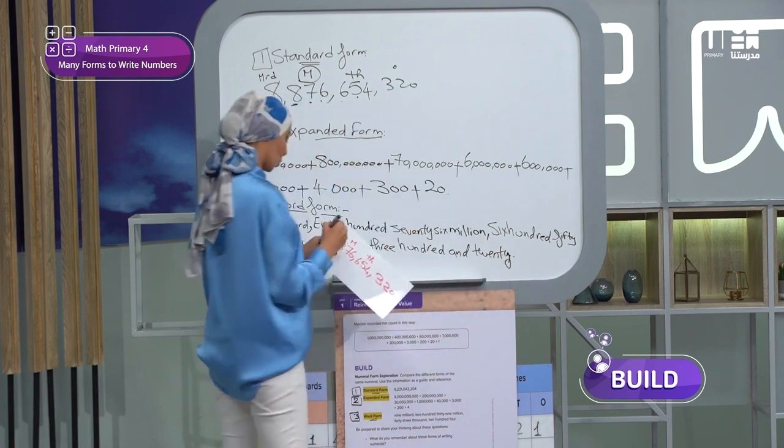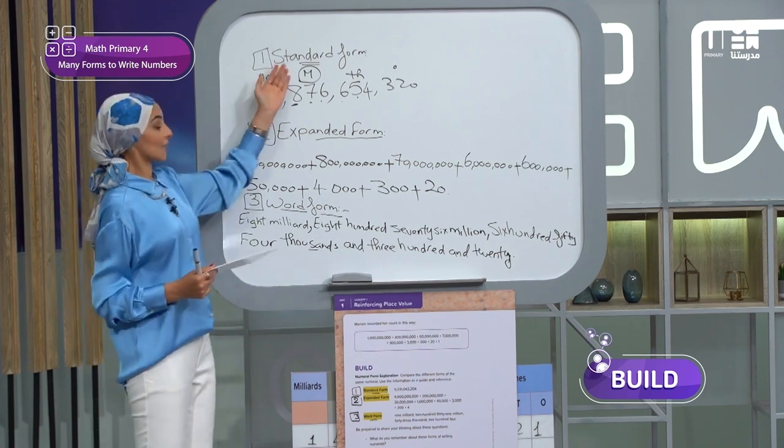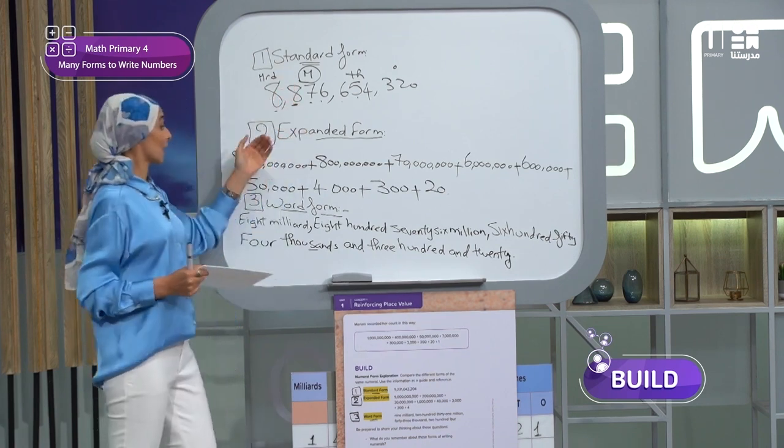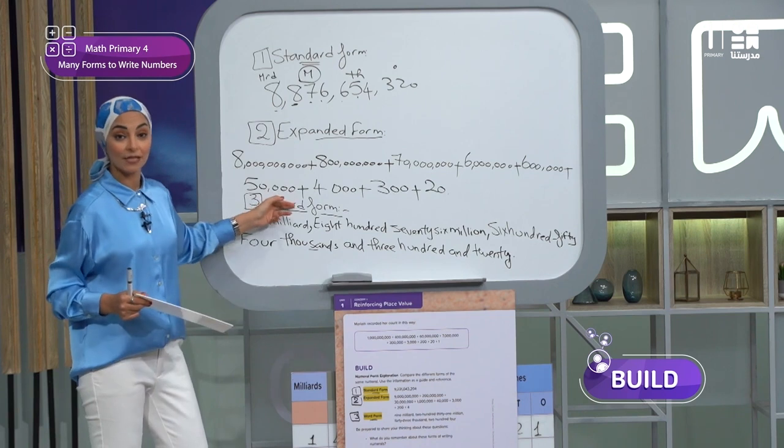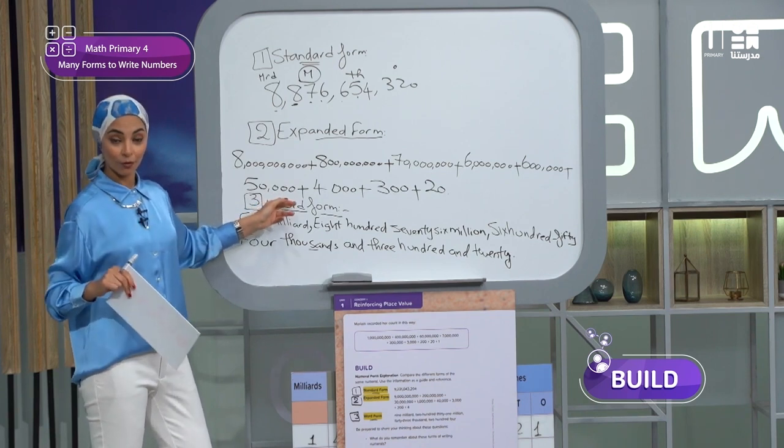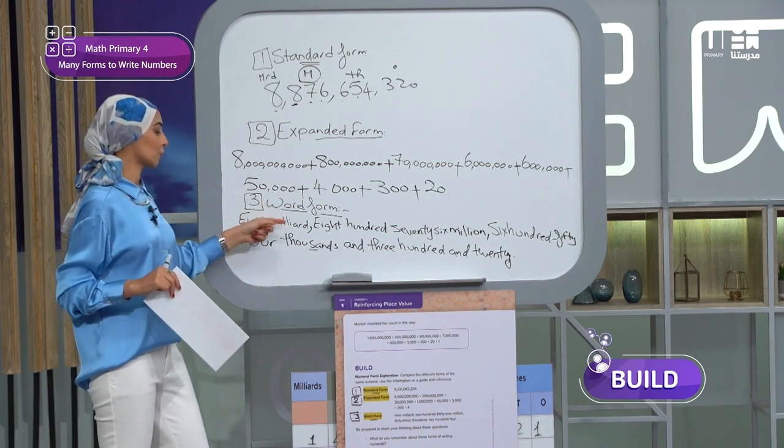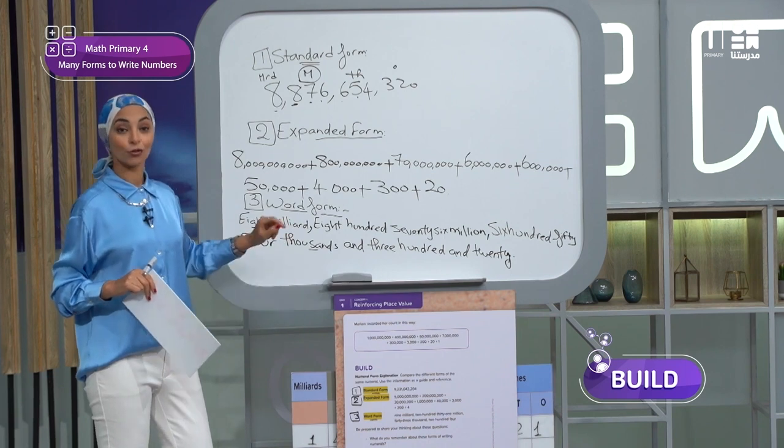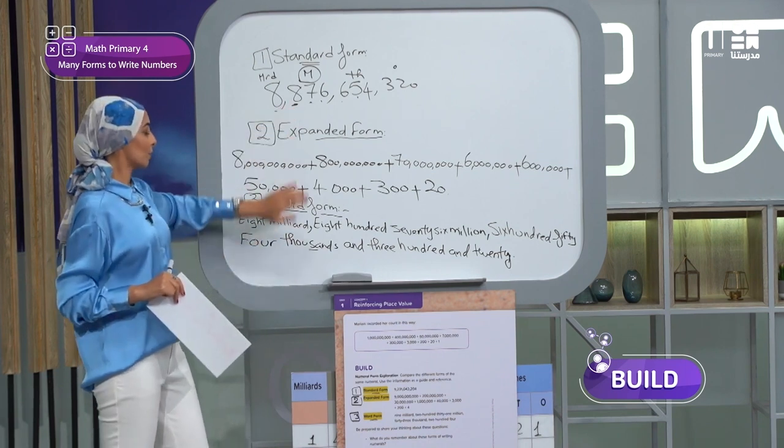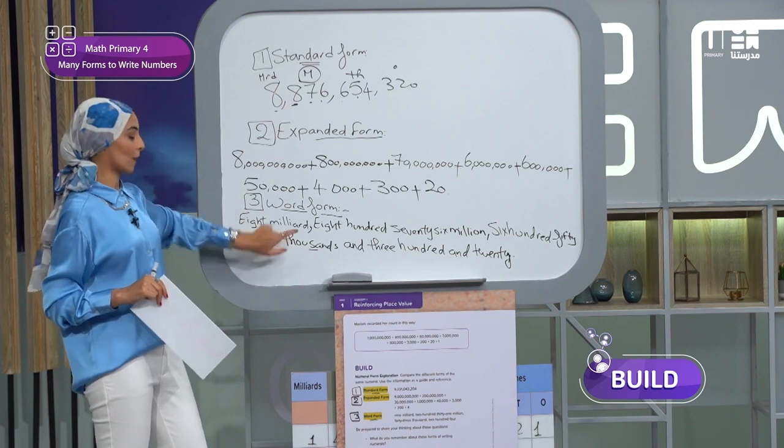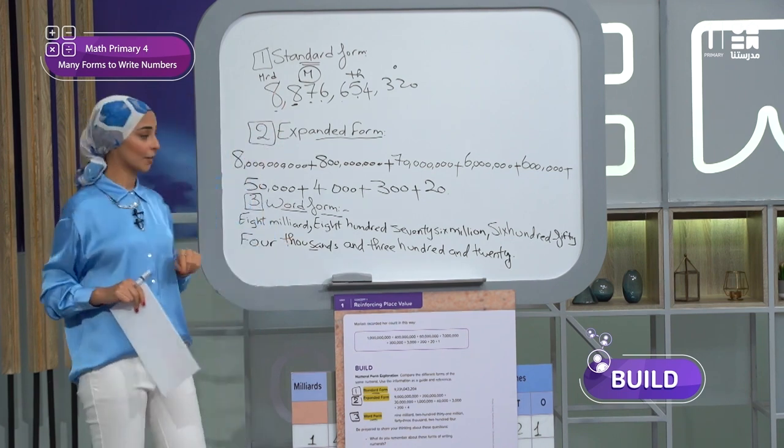Then the last one, three hundred and twenty. And three hundred and twenty. Now we wrote the three forms of the numbers, standard form in digits, expanded form like you see, each digit alone with its value.